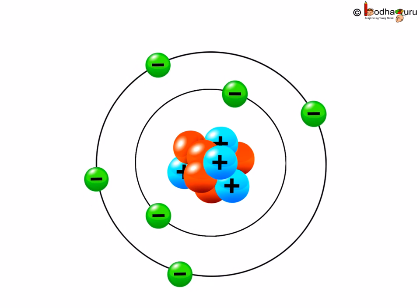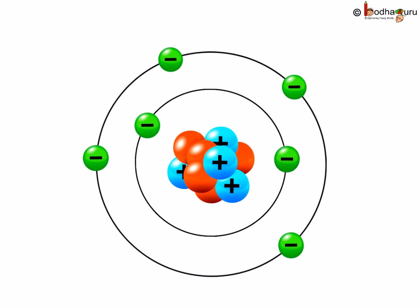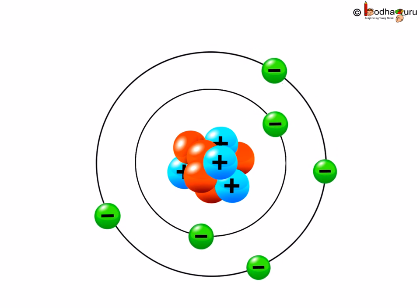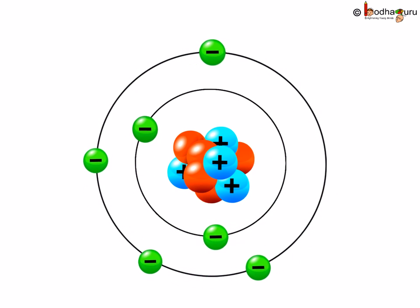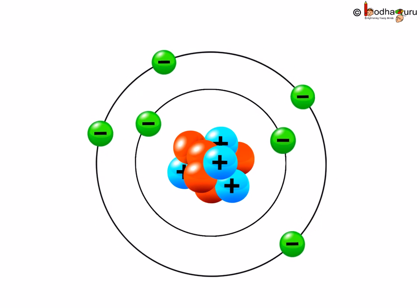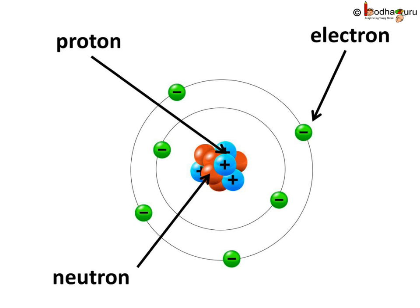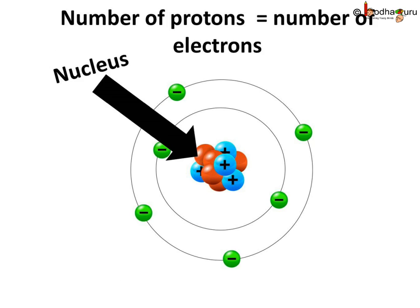Hello everyone. We already know that nearly all the mass of an atom resides in the center, which is positively charged, and this is the nucleus. The protons and neutrons stay packed in the nucleus, and the electrons revolve around the nucleus in discrete orbits or shells. The proton is positively charged and the electron is negatively charged, but the magnitude of charge is the same. For an atom to be neutral, the number of protons has to be equal to the number of electrons, and that is exactly what happens.